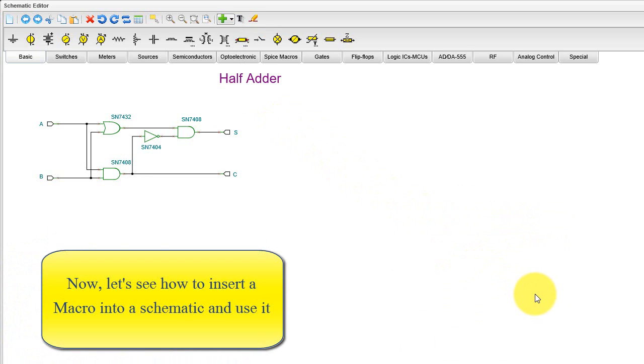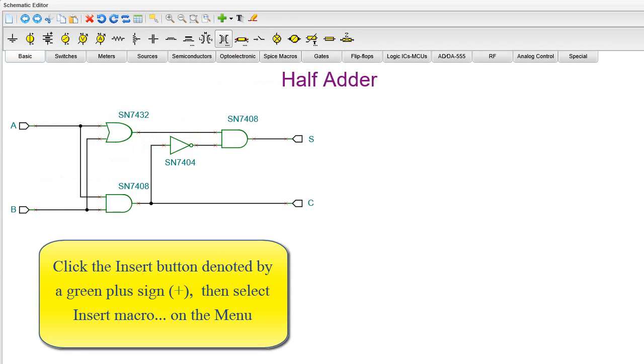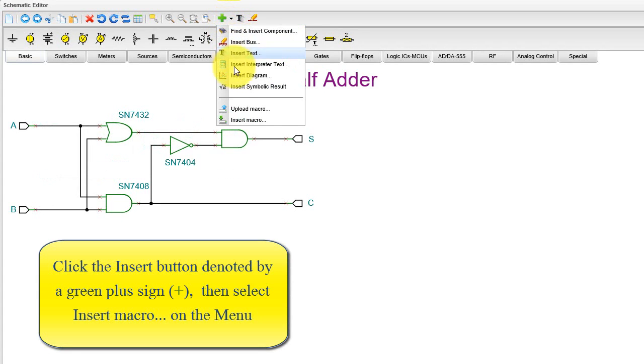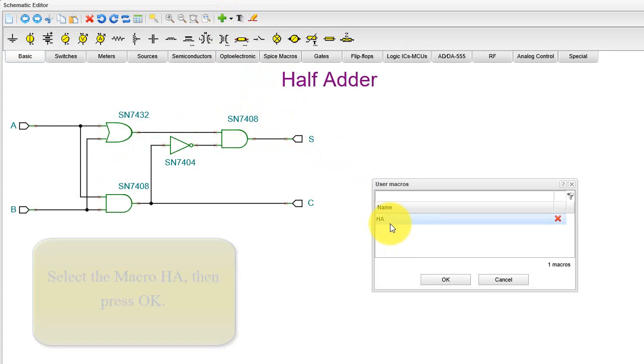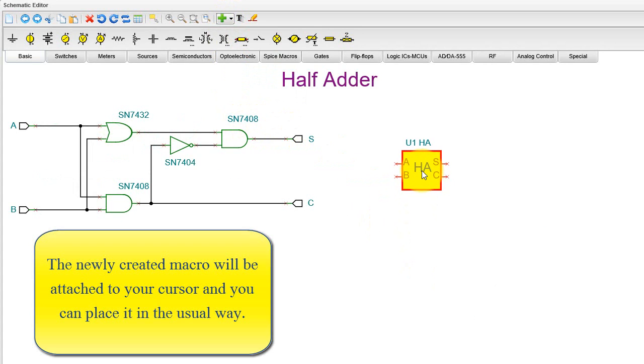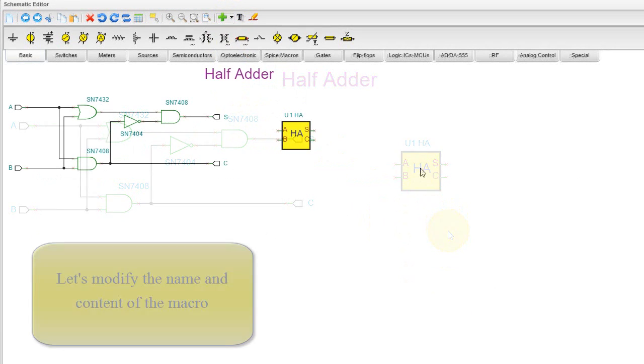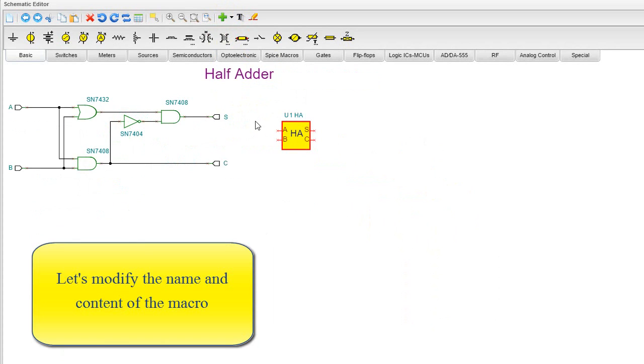Now, let's see how to insert a macro into a schematic and use it. Click the Insert button, denoted by a green plus sign, then select Insert Macro on the menu. Select the macro HA, then press OK. The newly created macro will be attached to your cursor, and you can place it in the usual way. Let's modify the name and content of the macro.